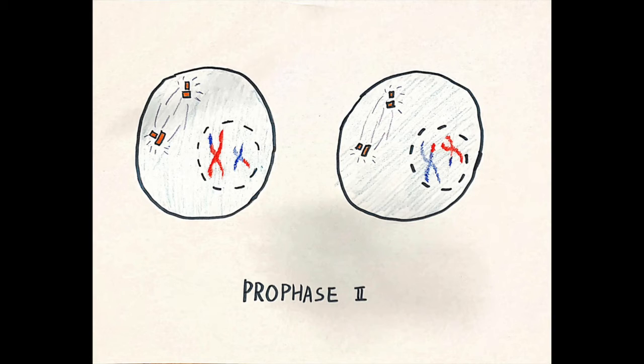where two haploid daughter cells form four haploid daughter cells, each containing half of the genetic material that is previously stored in the original replicated diploid cell. This begins immediately after cytokinesis.